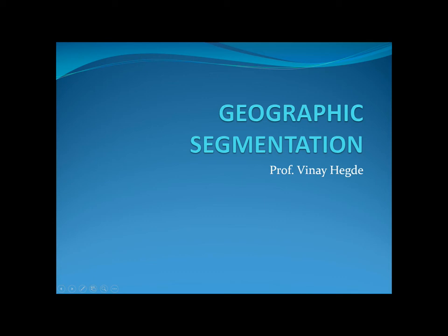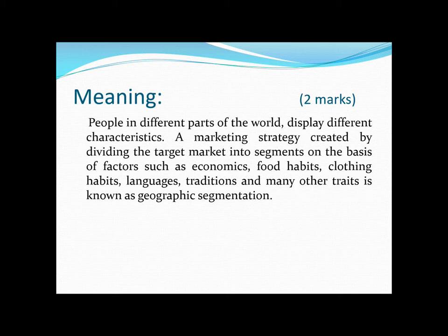For the two-mark definition, I have written two sentences here which are easy to remember. Geographic segmentation is dividing the heterogeneous market on the basis of geographical features like population density, food habits, clothing habits, languages, traditions, and many other traits. People in different parts of the world display different characteristics, and these characteristics are influenced by all surrounding forces.